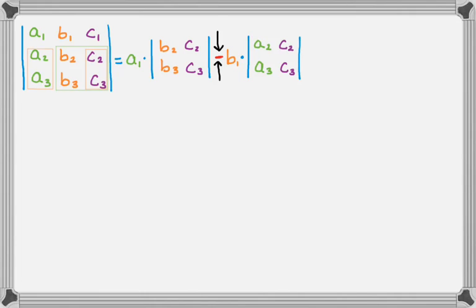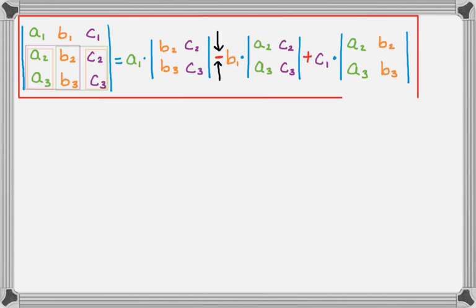I'm always just crossing out the row and column from this coefficient that I'm pulling out. So it's a1, cross out the row and column, you get that 2x2. Minus b1, cross out the row and column, you get that 2x2. And then it's going to go back to plus. And then c1, cross out the row and column, and it leaves you with this 2x2 right here. A2, b2, a3, b3, like that.